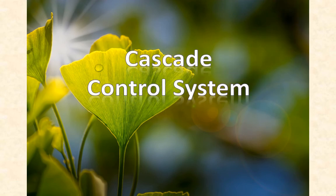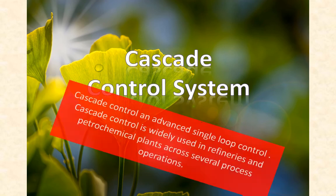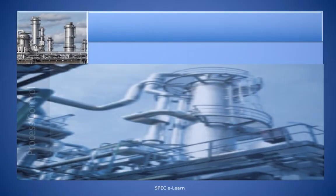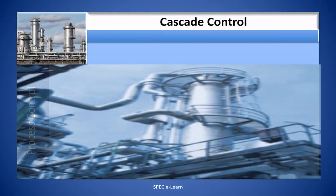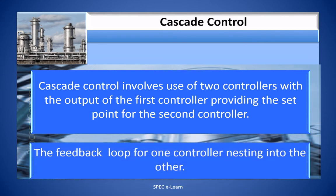Having discussed split range control, we will move on to cascade control. What is cascade control and how is it different from other closed loop control? Cascade control is an advanced single loop control, widely used in refineries and petrochemical plants. It involves use of two controllers, with the output of the first controller providing the set point for the second controller, with the feedback loop for one controller nesting into the other.